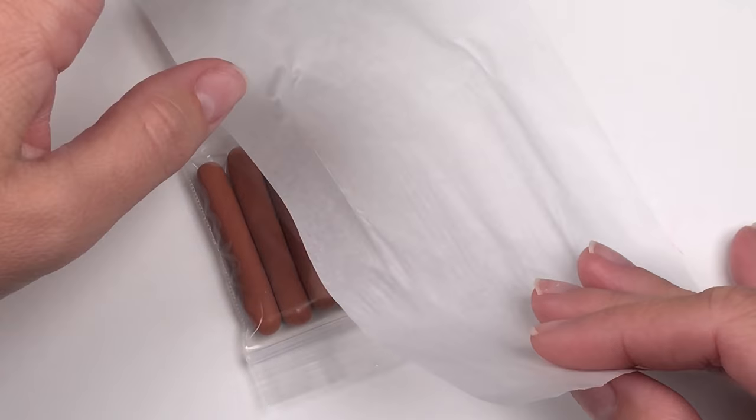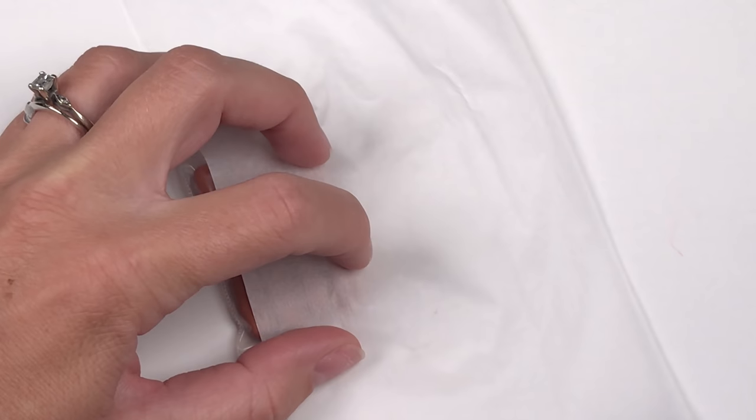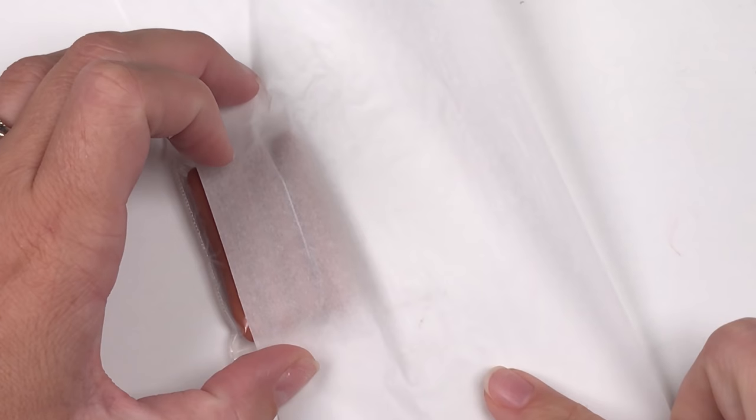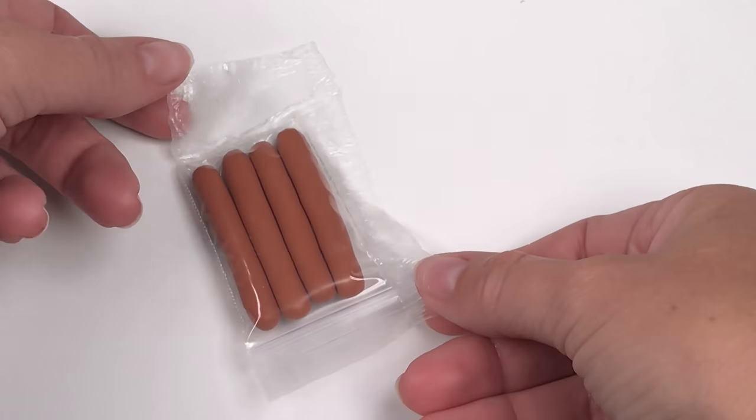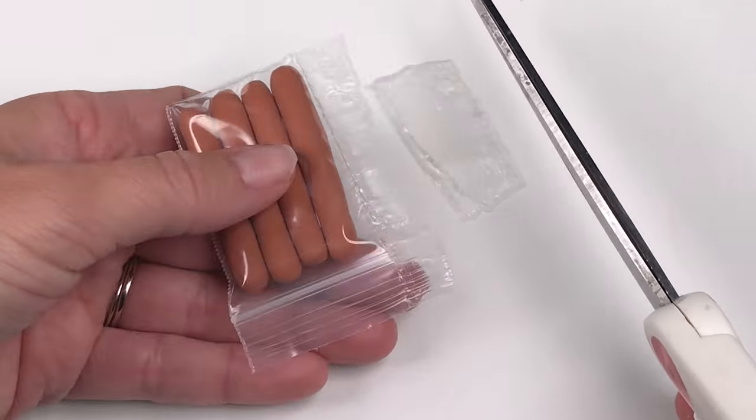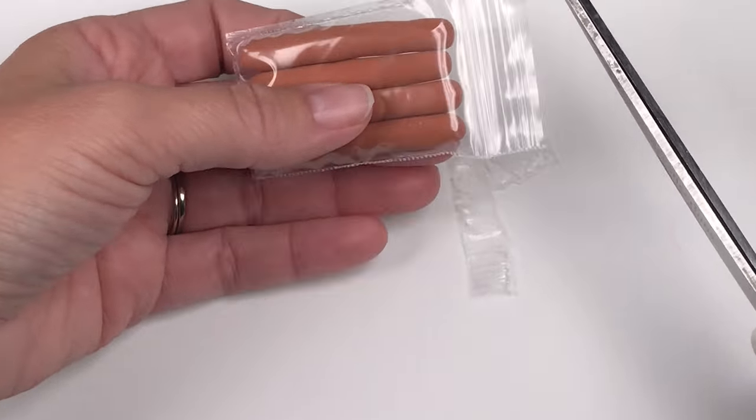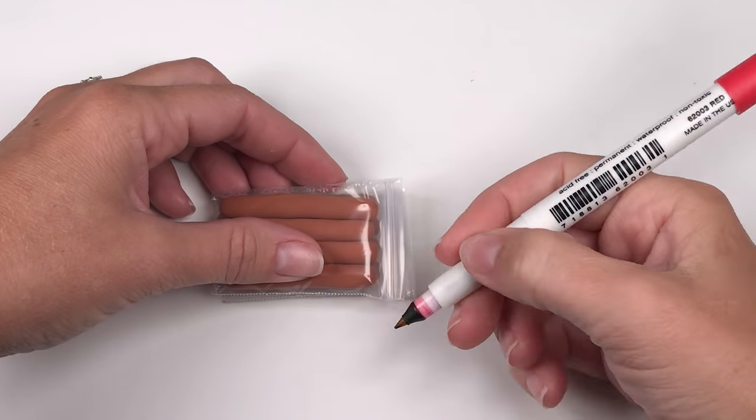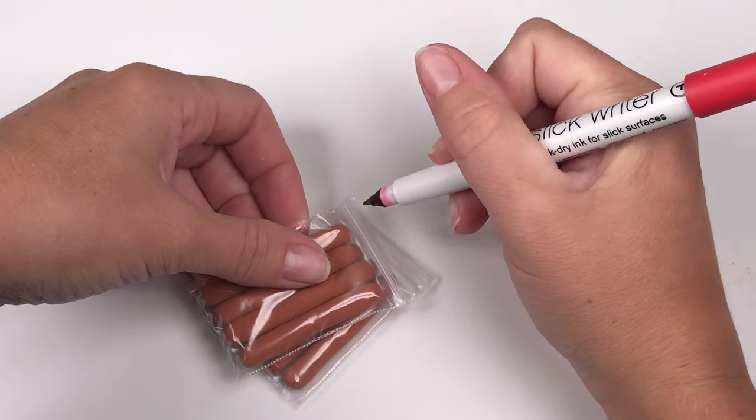Repeat this process on the other side and you will have made your bag the perfect size for your hot dogs. Cut off the excess and you've made the perfect package.